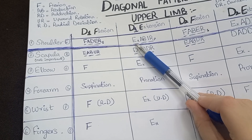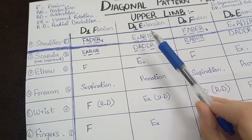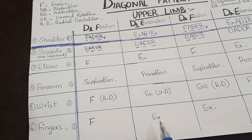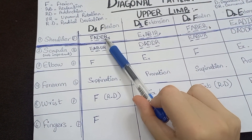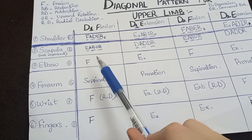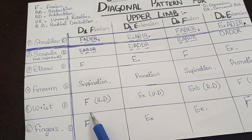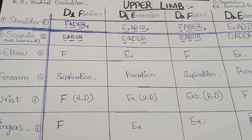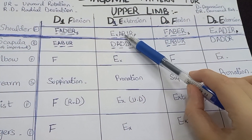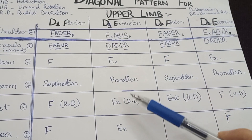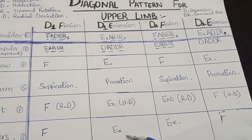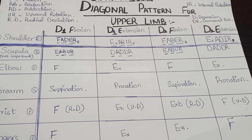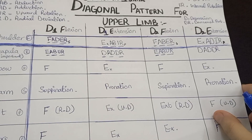As there is extension in the shoulder for D1 extension, there will be extension in the elbow, extension in the wrist, and extension in the fingers. Similarly, as D1 flexion had flexion in the shoulder, there was flexion in the elbow, wrist, and fingers. For D1 extension, extension occurs throughout — shoulder, elbow, wrist, and fingers — and pronation occurs in the forearm.